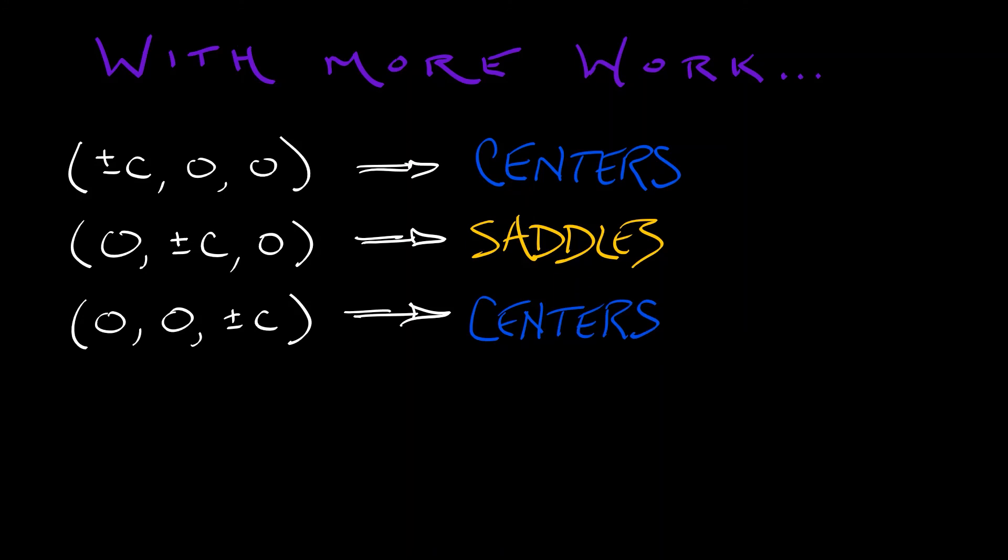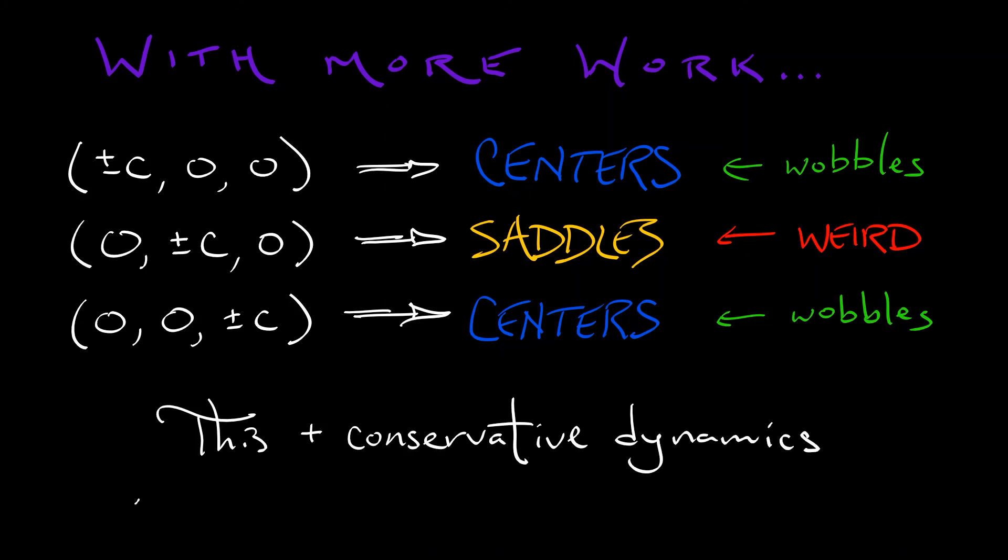Now what this means physically is that you're wobbling. If you're rotating about the x or the z-axis and you perturb it a little bit, it just wobbles. But if you're rotating about the y-axis, this intermediate axis, then weird things happen. If you perturb away from that equilibrium, it's not stable. It's not even weakly stable. This plus a little bit of what we know about the conservative nature of the dynamics explains some really interesting behavior.